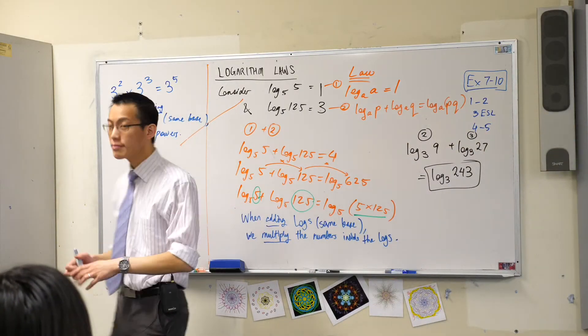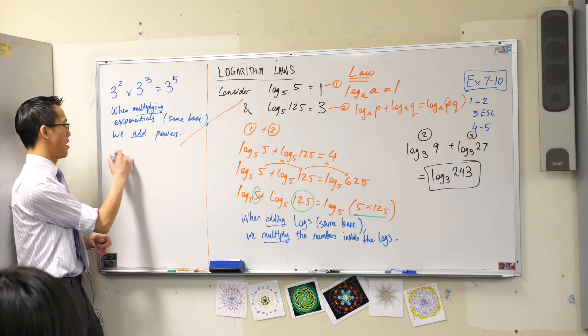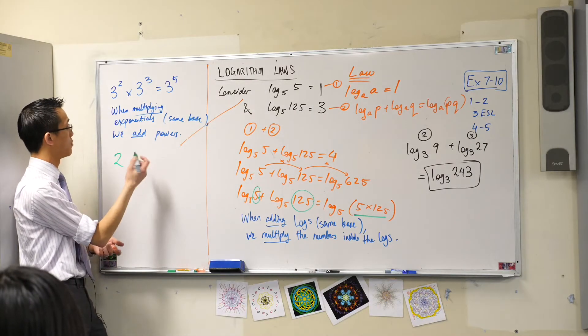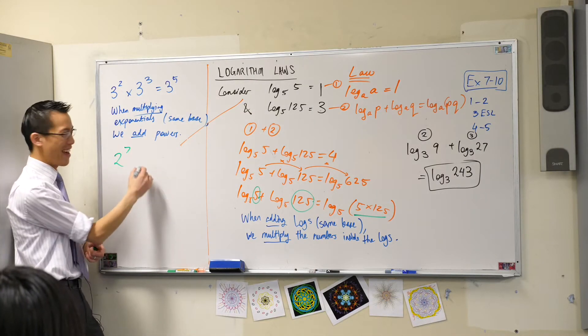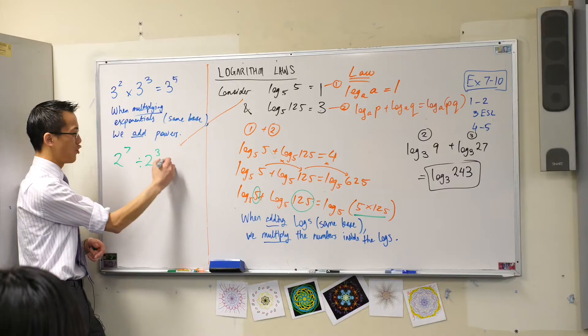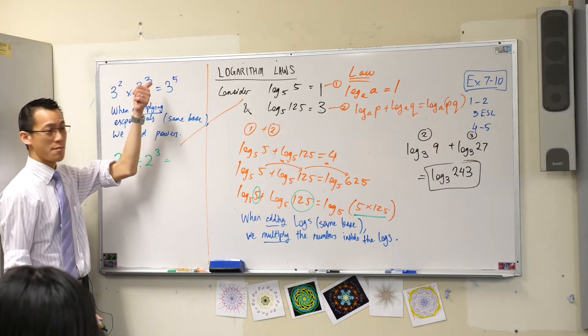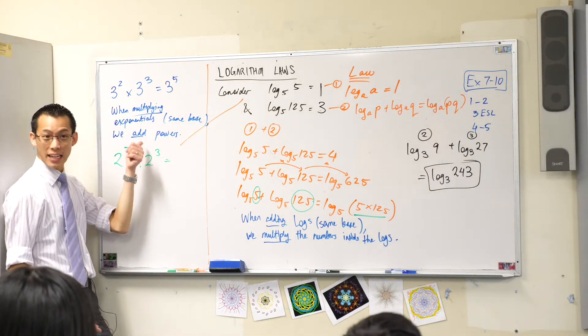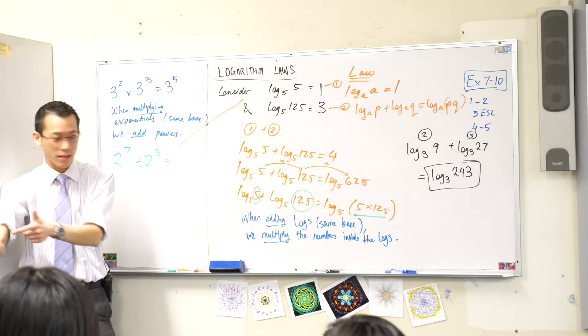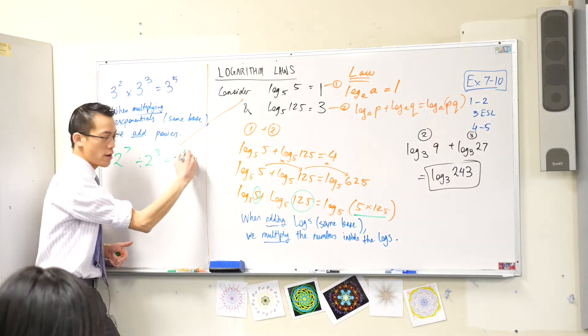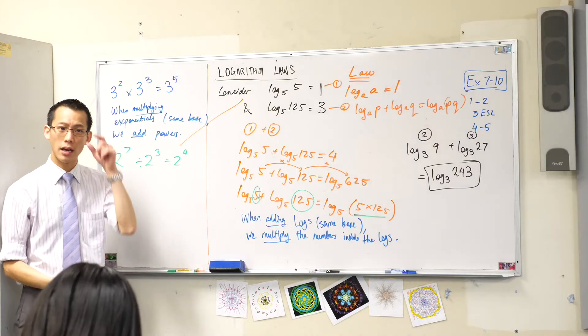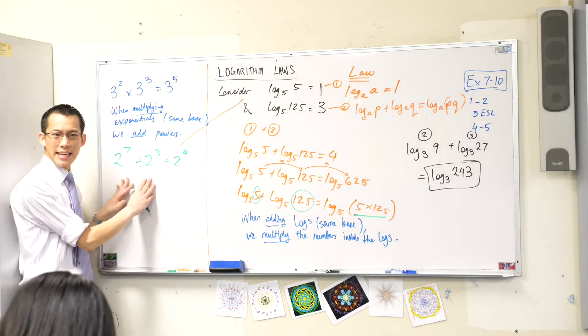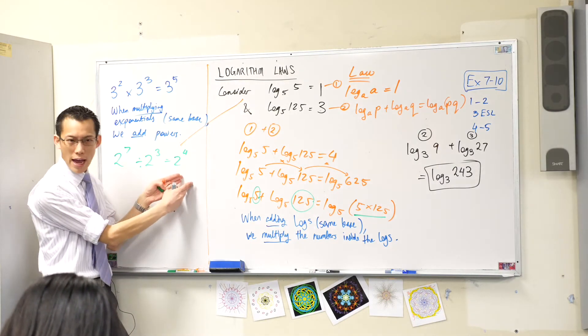Do you remember if I gave you something like 2 to the 7 divided by 2 cubed. You're dividing instead of multiplying so instead of adding, this is the opposite, right? What do I do? I subtract. I subtract. 7 take away 3, okay? So therefore dividing exponentials turns into subtraction.